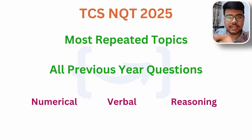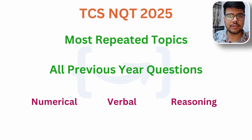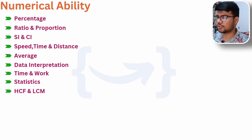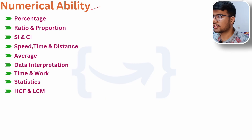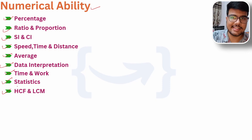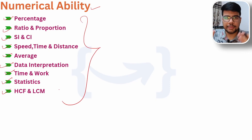I have attached questions in this particular presentation. I will let you know all of the important topics in this video so that it will help you craft your upcoming TCS NQT exam. So you're watching Prime Coding and I am Aditya Mishra. Let's begin with the Numerical Ability section — percentage, ratio, proportion, SI/CI, speed-time-distance, average, data interpretation, time and work, statistics, and HCF and LCM.